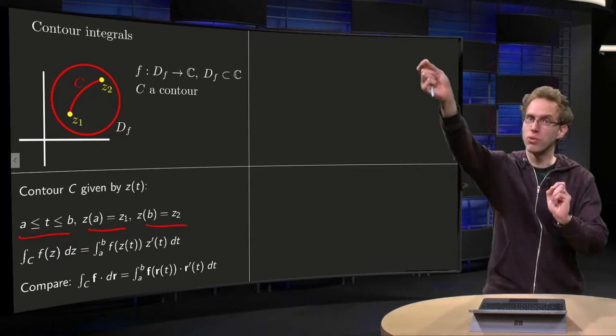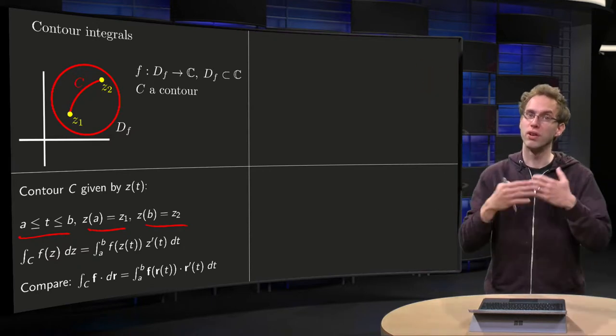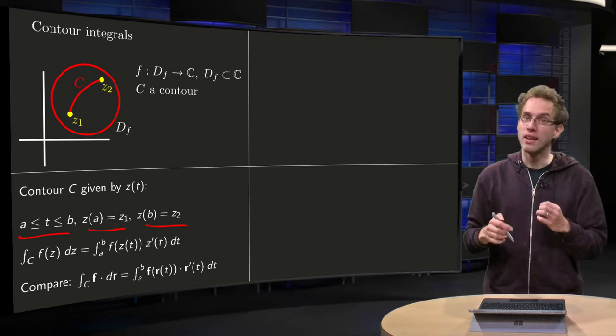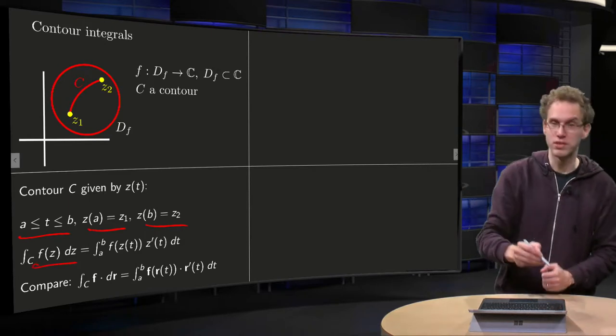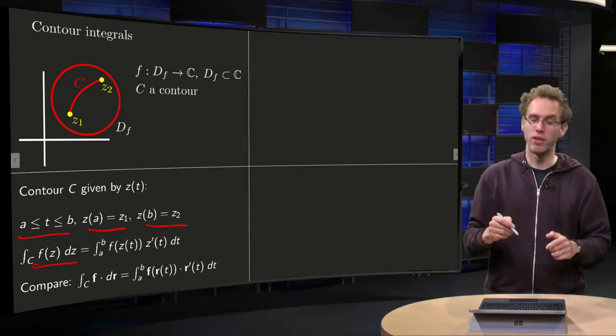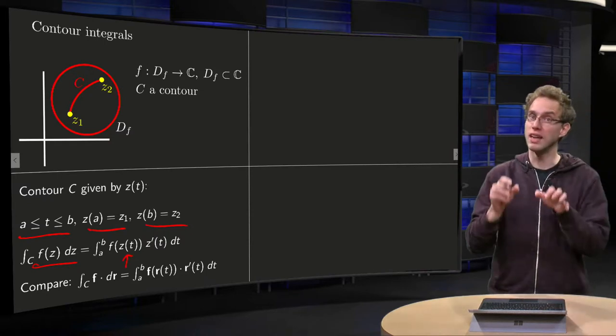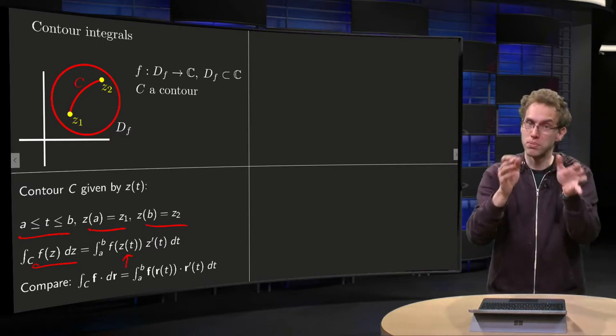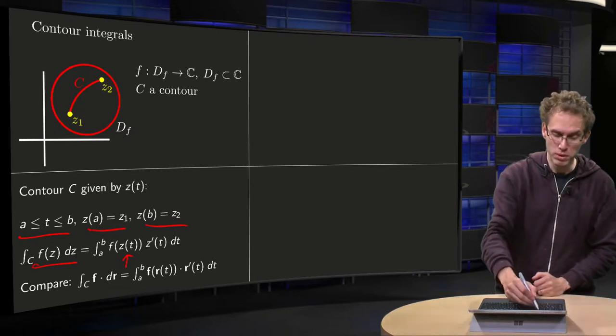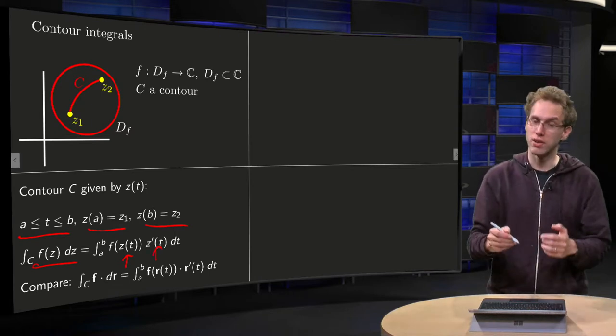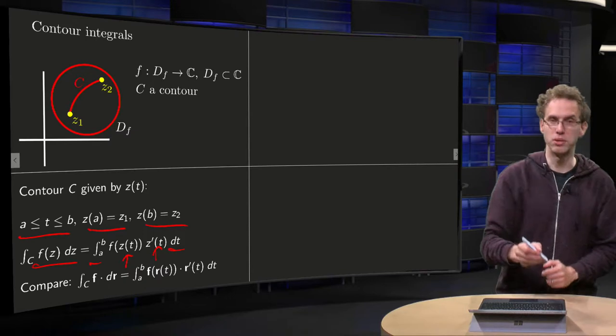And we go through all of the curve if we vary T. Then the integral along C, f z dz, how is it defined? Well you plug in the parameterization z of T into your f, so now this depends on T. You multiply by z prime of T and you integrate with respect to T from A to B.